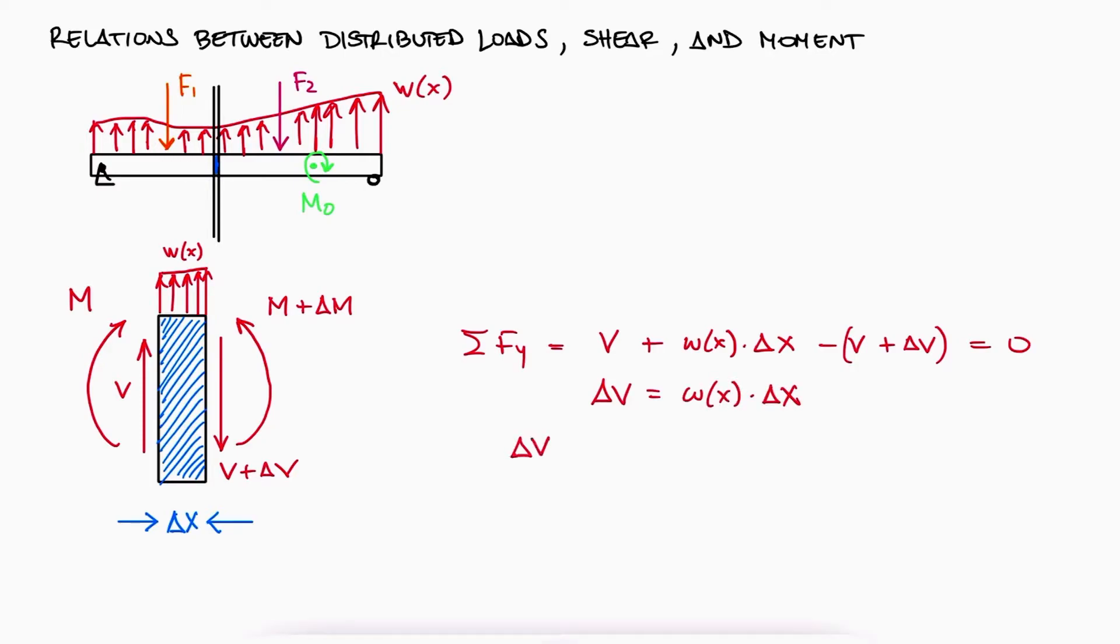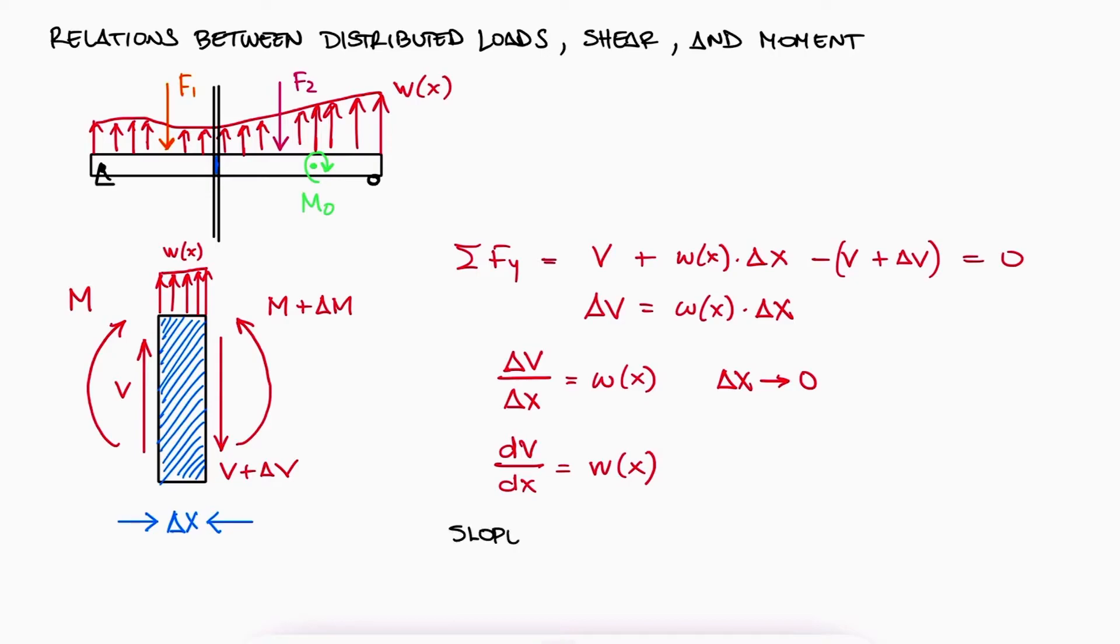For an infinitesimal cut where delta x approaches zero, dV/dx is equal to W(x). This means that the slope of the shear diagram is equal to the distributed load intensity W.